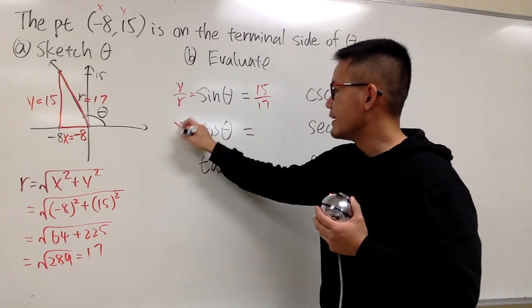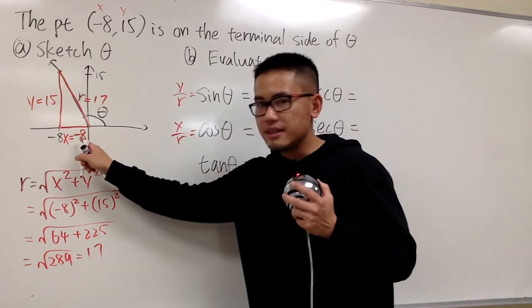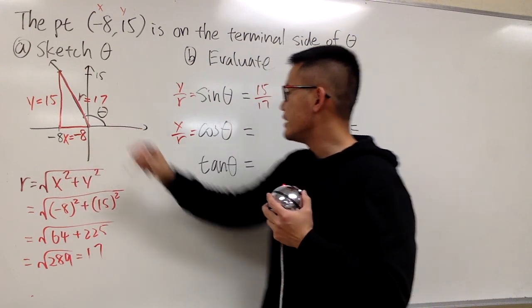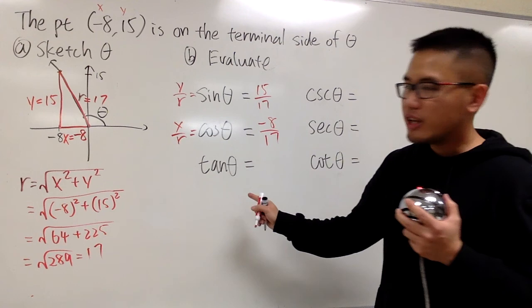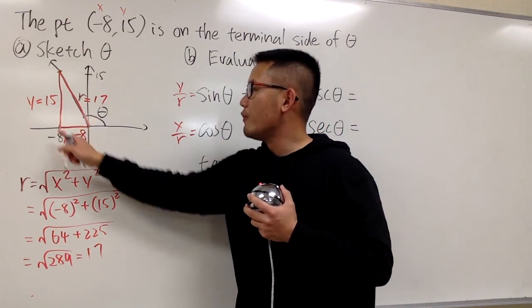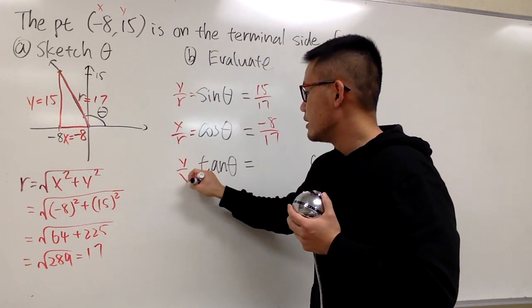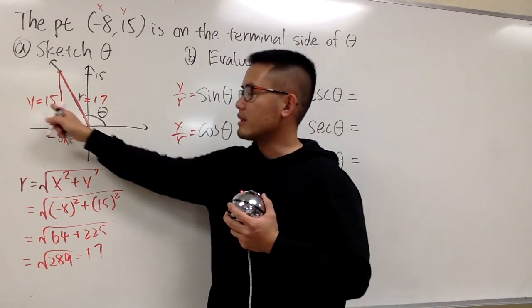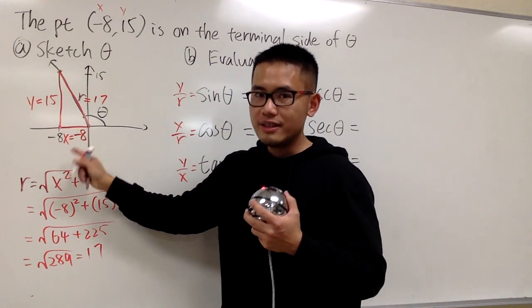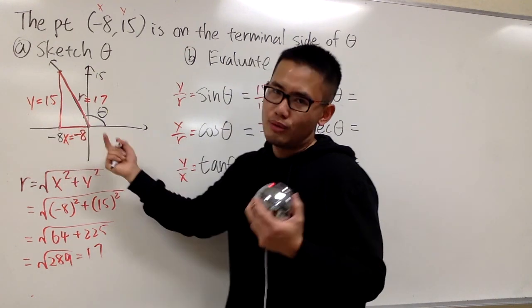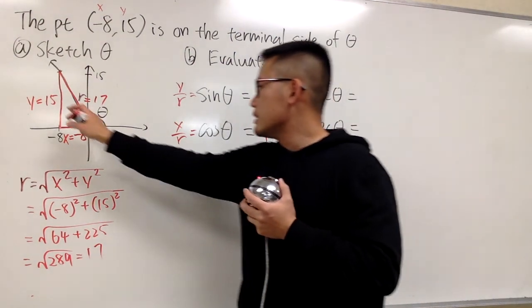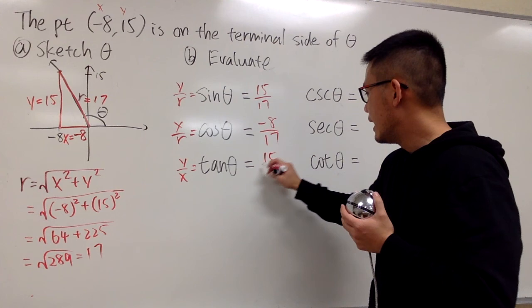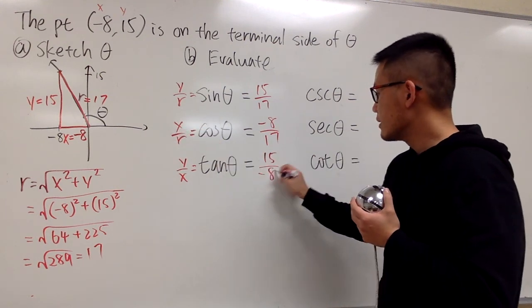Cosine is x over r. x is negative 8, r is 17. So we have negative 8 over 17. Tangent is y over x. And you can see it's almost like opposite over adjacent, if you look at this as your angle. But anyways, y over x. y is 15, x is negative 8. And this is 15 over negative 8.